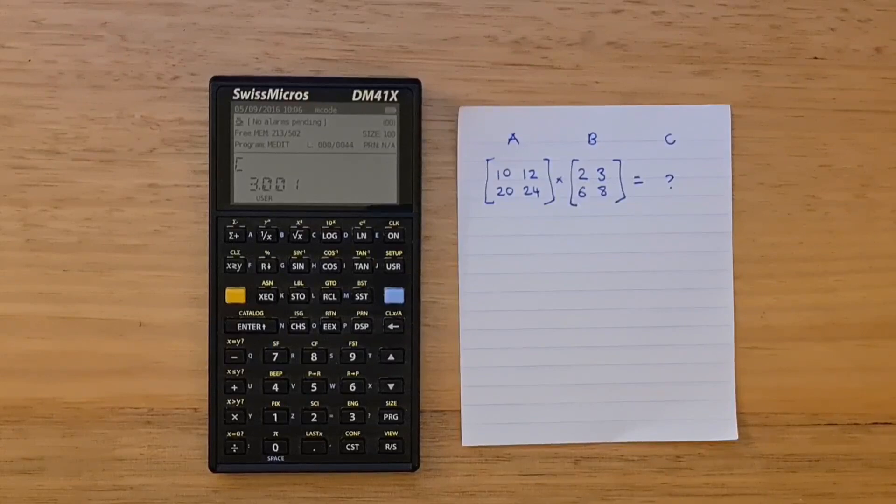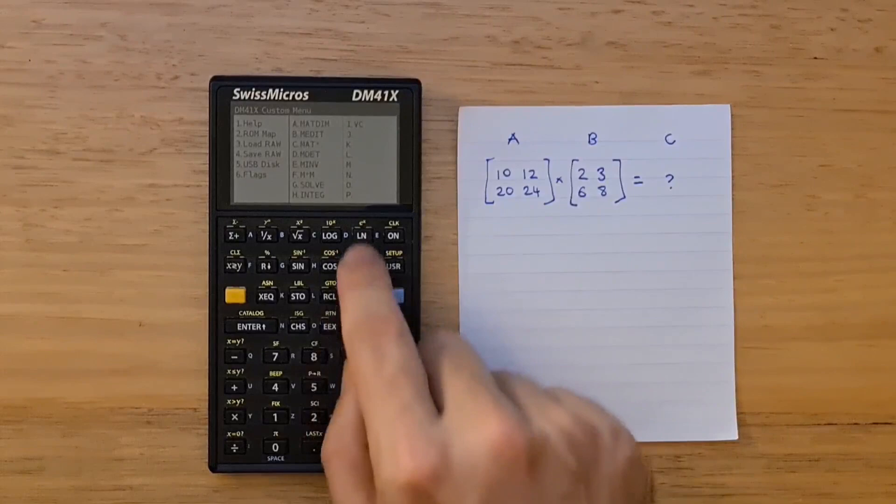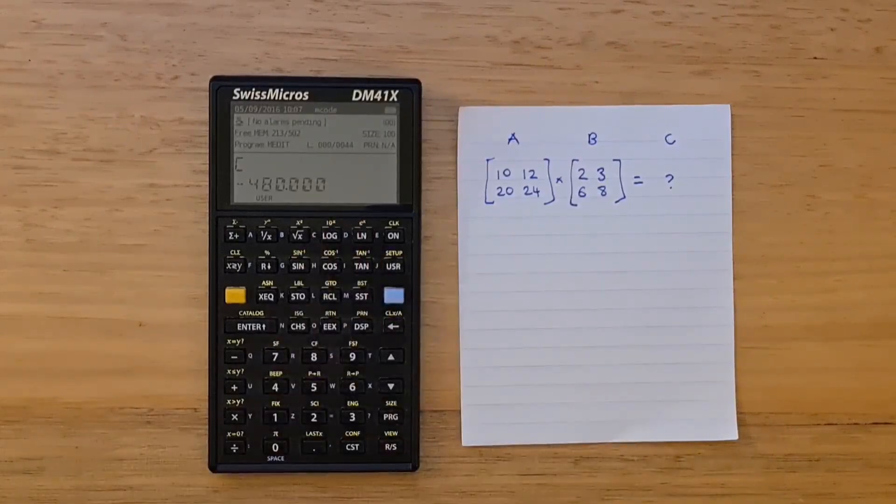Matrix operations in the Advantage Pack also cover lower upper decomposition operations, which allow finding the solution to a system of equations. You can also do basic operations like finding the determinant or inverse of a matrix. For example, the determinant of C is negative 480.